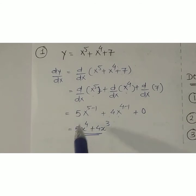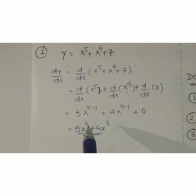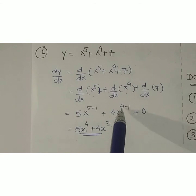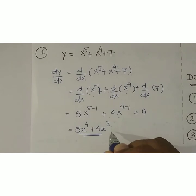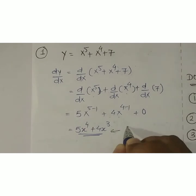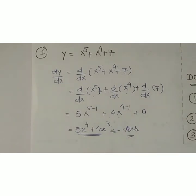So the answer is: 5·x raised to (5−1) = 5x⁴, plus 4·x raised to (4−1) = 4x³. That is your answer — dy by dx = 5x⁴ + 4x³. This is how differentiation is done.